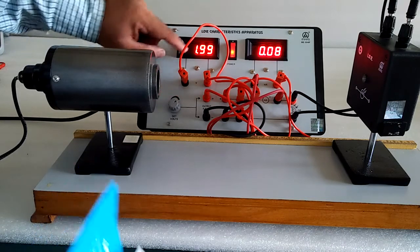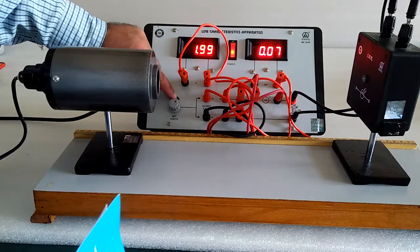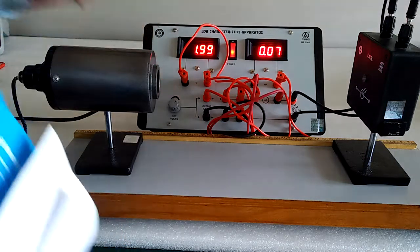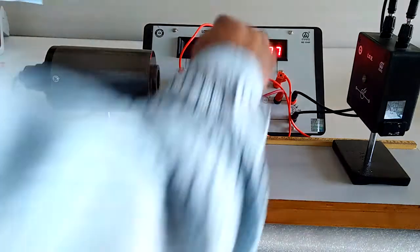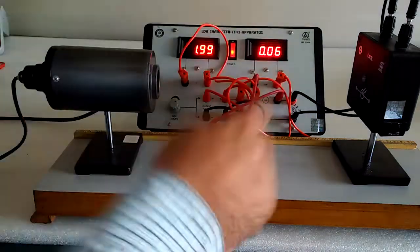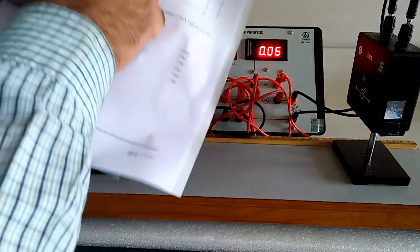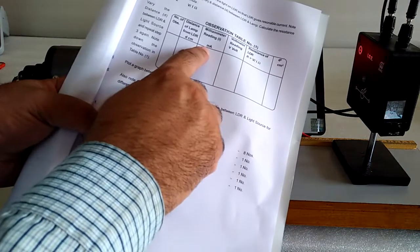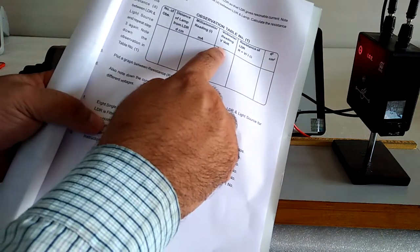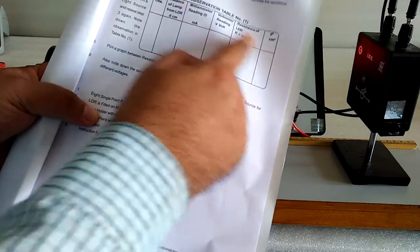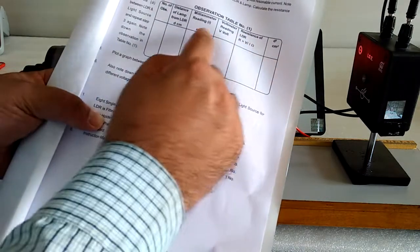Fix the voltage with the potentiometer. Note down the distance, the current meter reading, the voltmeter reading. Find the resistance and square the distance.